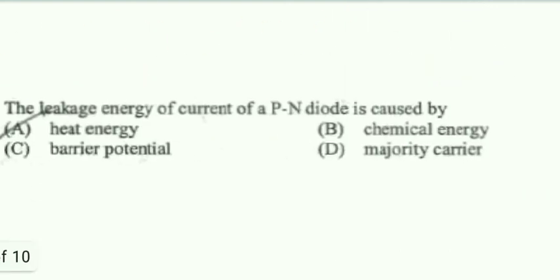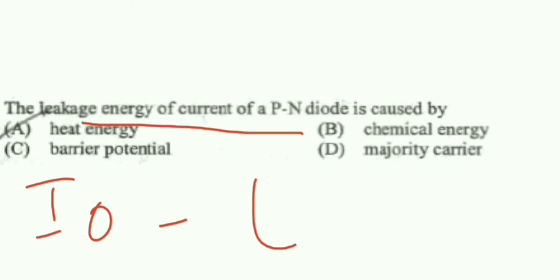The leakage current of a PN diode is caused by? We know that in PN diode, leakage current is due to temperature. It is a minority carrier current, so it is caused by the heat energy. So option A is the right answer, where chemical energy, potential barrier, or majority carrier is not at all having any effect. Minority carrier current or leakage current is due to temperature or heat energy.